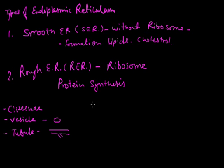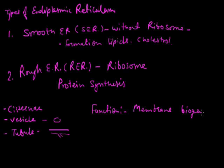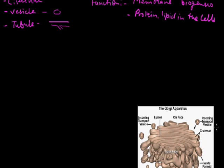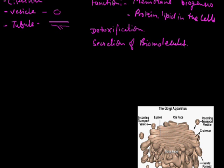So what are the functions of the endoplasmic reticulum? It is responsible for membrane biogenesis — meaning it is responsible for membrane formation in the cell. Another important function is that it is responsible for the formation of proteins and lipids in the cell. It also helps in the detoxification of molecules — smooth endoplasmic reticulum helps in detoxification. It is also responsible for the secretion of various biomolecules in the cell. This cell organelle is present in all plant and animal cells except bacterial cells, because bacteria is a prokaryotic cell.